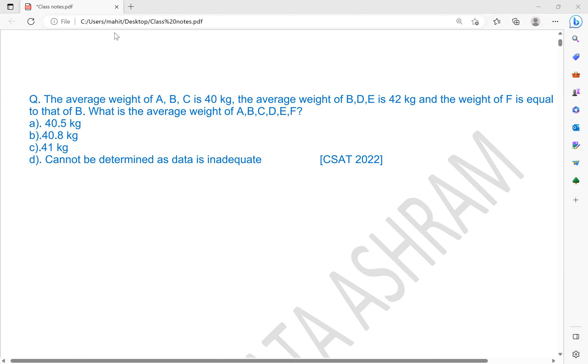So students, focus on the question. The average weight of A, B, C is 40 kg, the average weight of B, D, E is 42 kg, and it's given that the weight of F is equal to that of B.